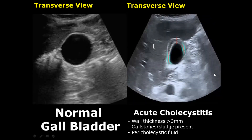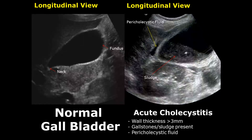Acute cholecystitis is the inflammation of the gallbladder. The first sign is an increase in wall thickness, which is more than three millimeters. In this transverse view we can see a thickened gallbladder wall. There can also be presence of gallstones or sludge, and the presence of pericholecystic fluid. In this image you can notice pericholecystic fluid — fluid outside the gallbladder — and the walls are thicker with presence of sludge.